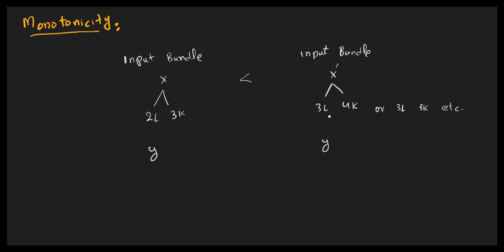Monotonicity simply means that if you can produce a certain level of output using factor input bundle x, then you can also produce the same output using the other factor input bundle x prime. So if at a low amount of labor and capital you can produce y, then using a higher level of factor inputs you must also be able to produce the same level of output.